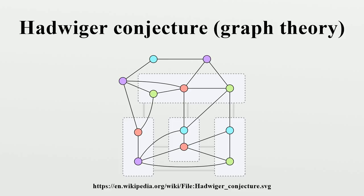For, if the conjecture is true, every graph requiring five or more colors would have a K_5 minor and would be non-planar. Klaus Wagner proved in 1937 that the case K equals 5 is actually equivalent to the four-color theorem and therefore we now know it to be true.